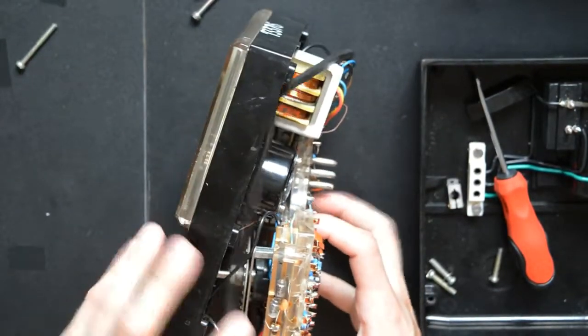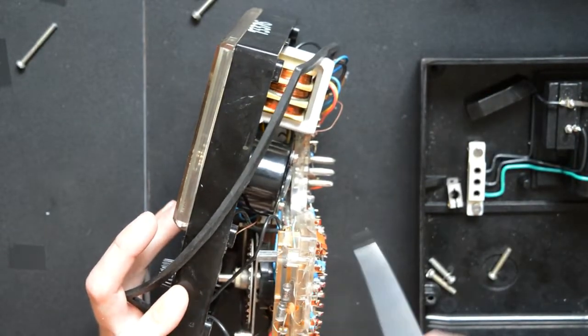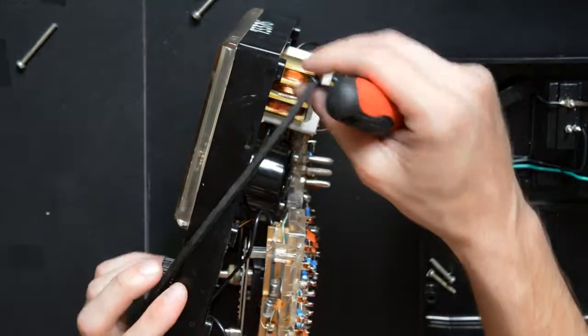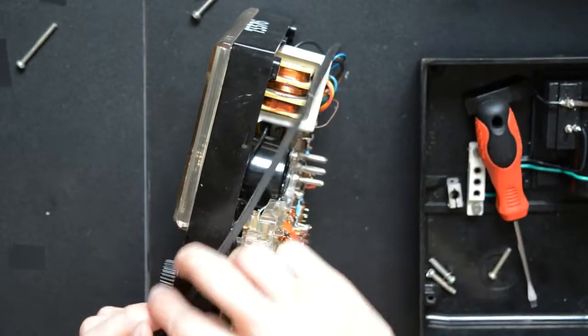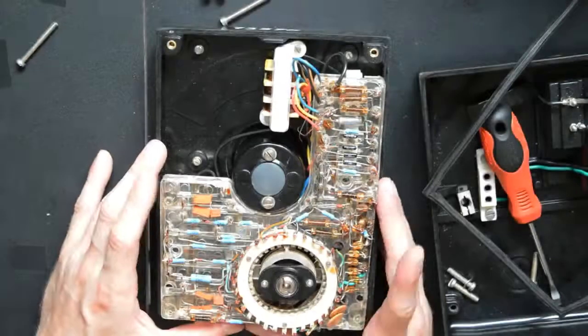If we look at it from the other side, we will see this massive shunt resistor here. And we have a better look at the AC transformer. And we have this rubber gasket.